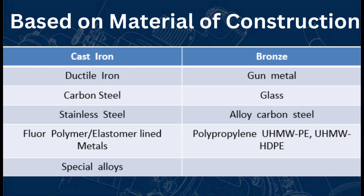The next classification is based on material of construction. A number of combinations are possible, and the piping engineer selects the material in consultation with the process engineer — to suit the process fluid and to suit the environment in which the valve is to be installed. The most commonly available materials are cast iron, ductile iron, carbon steel, stainless steel, fluoropolymer/elastomer-lined metals, special alloys, bronze, gun metal, glass, and alloy carbon steel.